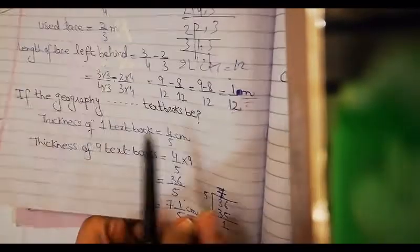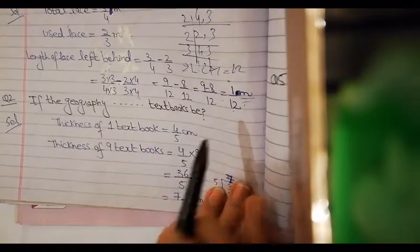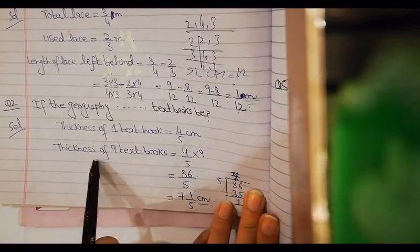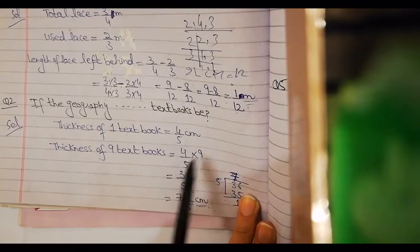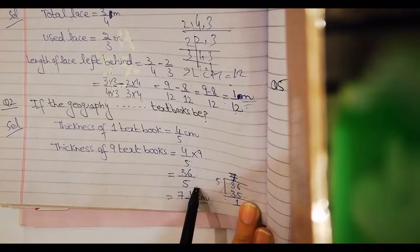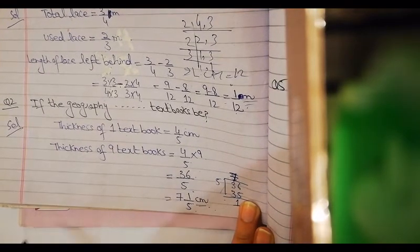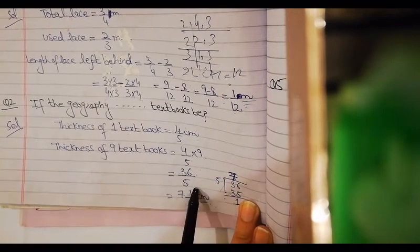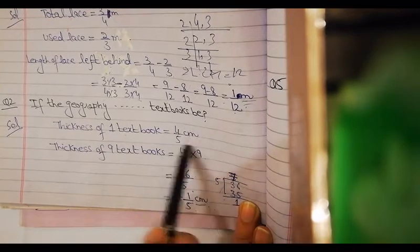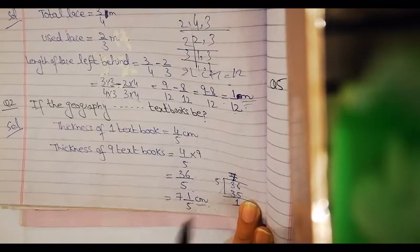The thickness of 1 textbook given is 4/5 cm. The thickness of 9 textbooks is 4/5 multiplied by 9. After multiplication, my answer is 36/5. 36/5 is an improper fraction. I have converted it in mixed form. After division, which is equal to 7 whole 1/5 cm. Obviously, if the value is given, then I have to put a unit in centimeter.